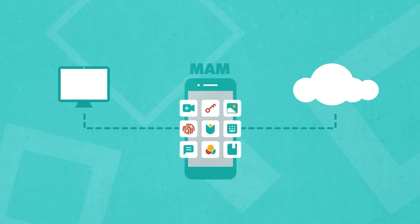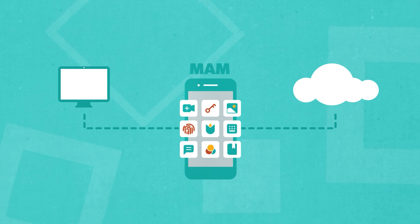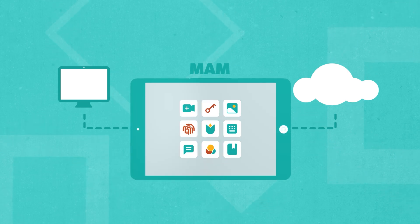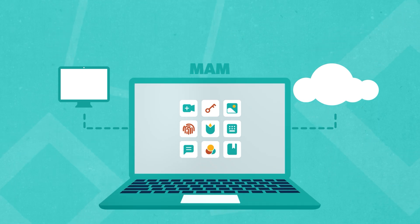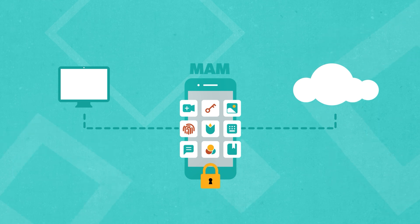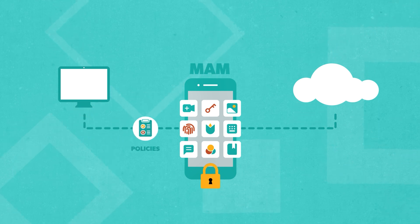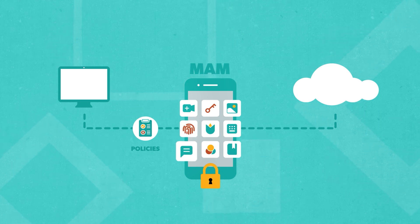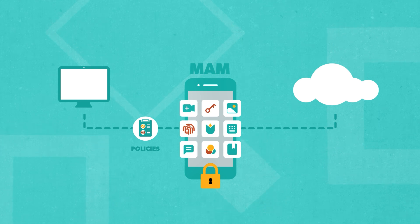MAM, or Mobile Application Management, on the other hand, ensures the safety and security of enterprise applications and the sensitive data within them. It allows admins to manage and secure the mobile apps used by their employees. MAM admins can institute application-level policies around activities such as downloading sensitive data, forwarding emails, or accepting incoming video calls from external parties.